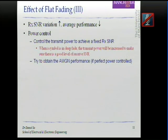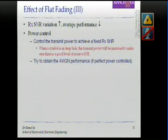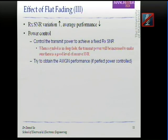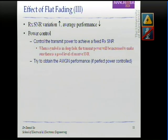Power control allows us to control the transmit power such that we can maintain a fixed received signal-to-noise ratio. Imagine someone standing very near to a base station — they receive very high power and a very good SNR. The base station doesn't need to transmit that much power, as long as the receiver maintains enough SNR for good performance. If the user moves toward the edge of a cell, the base station increases transmission power to compensate for the attenuation.